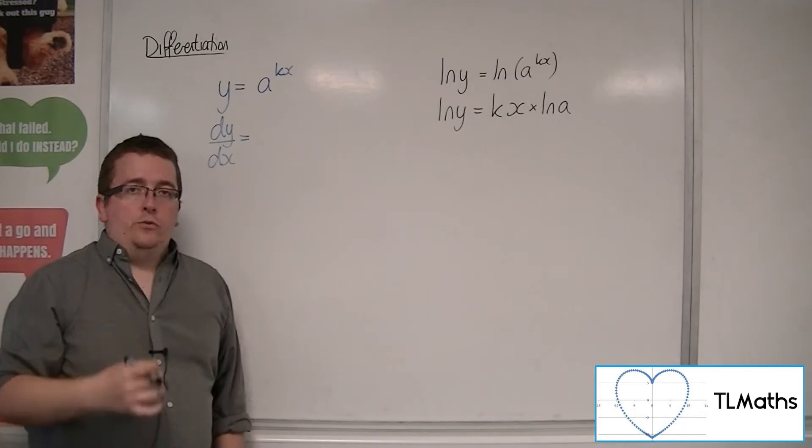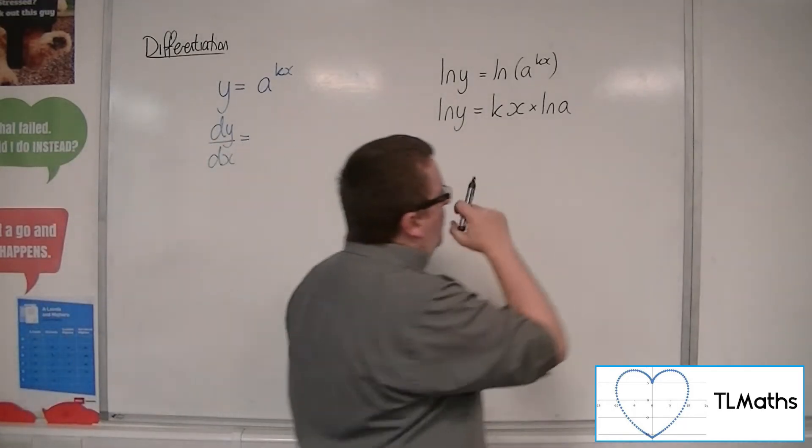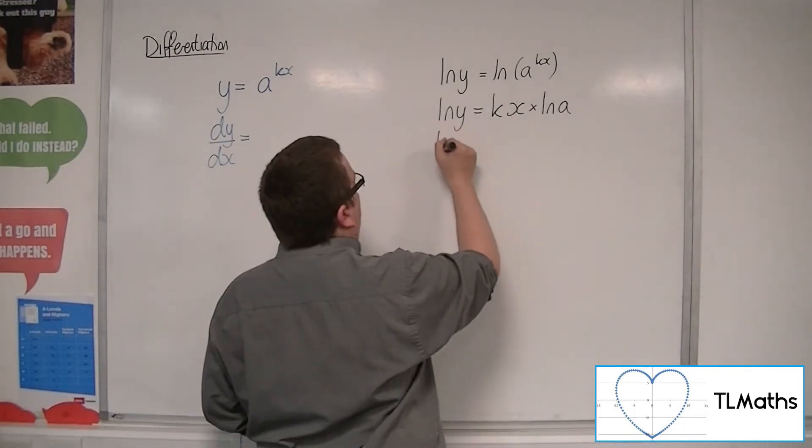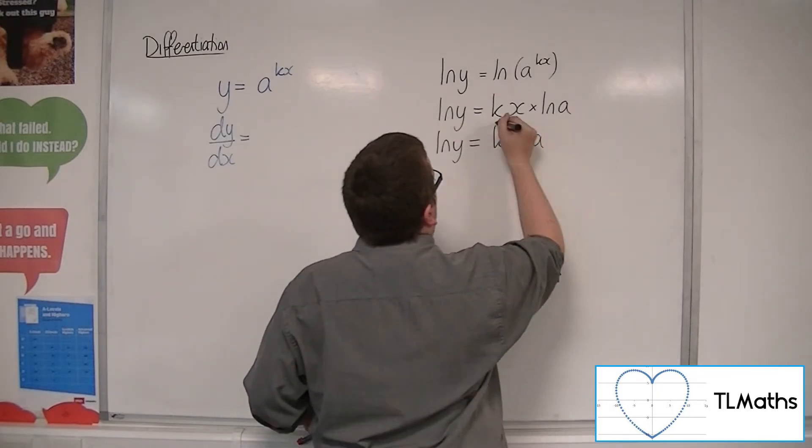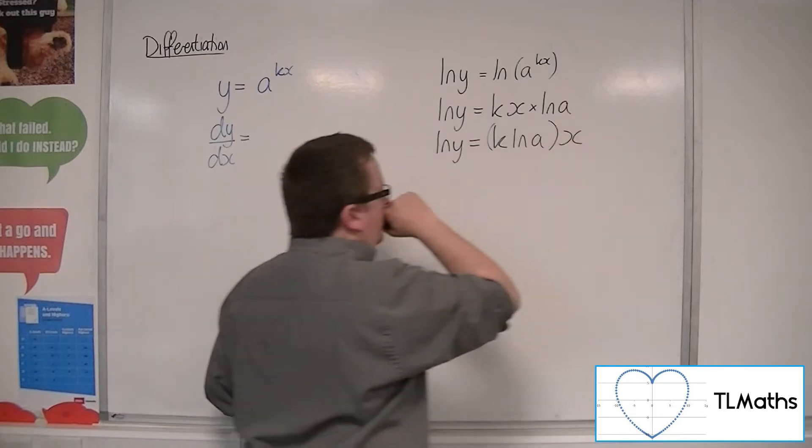I think probably what would be best is if I reorder that first. So ln of y is k ln of a times x.